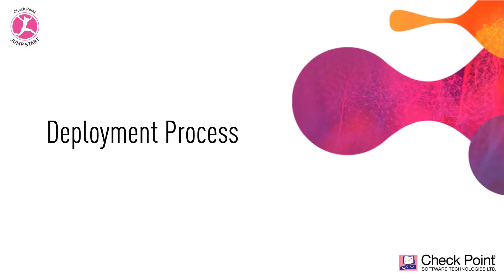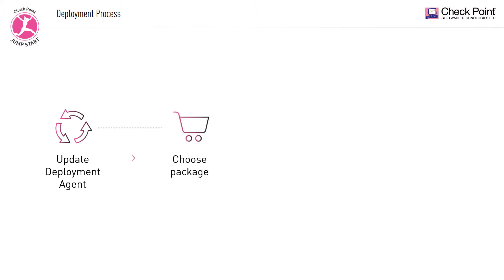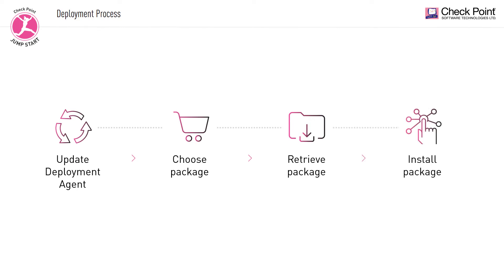Let's go over the CPUSE deployment process at a high level before we get into a common use scenario. To begin, we first need to update CPUSE to its latest deployment agent. Next, we choose the package we'd like to install, we retrieve the package to the machine, and finally we install it. As simple as that.